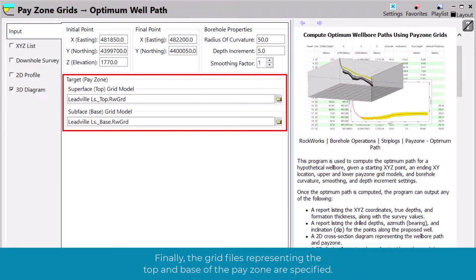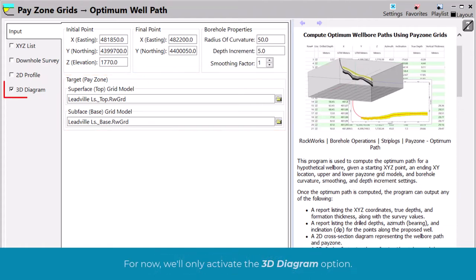Finally, the grid files representing the top and base of the pay zone are specified. For now, we'll only activate the 3D diagram option.